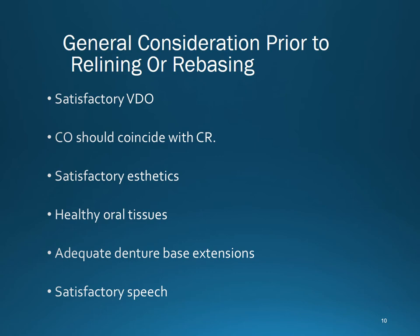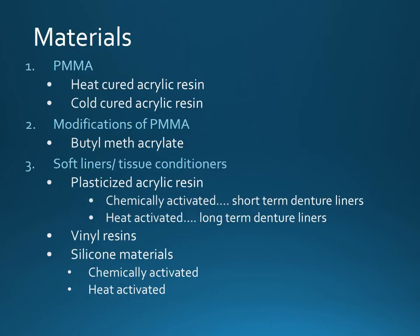General considerations prior to relining or rebasing: there should be a satisfactory vertical dimension of occlusion (VDO), centric occlusion should coincide with centric relation, satisfactory aesthetics, healthy tissue, correct denture extension, and satisfactory speech.